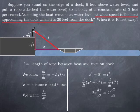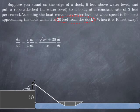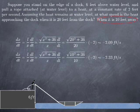We solve for the unknown rate dx/dt and obtain L over x multiplied by the rate of change of L. Since we are looking for the speed when the boat is 20 feet from the dock, we know dL/dt and x, but L is not given directly. From the Pythagorean theorem, x squared plus 36 equals L squared, so we can replace L with the square root of x squared plus 36. When x equals 20, plugging in 20 for x and negative 2 for dL/dt, we obtain negative 2.09 feet per second. When the boat is 10 feet from the dock, plugging in x equals 10 and dL/dt equals negative 2, we get negative 2.33 feet per second. The boat is accelerating as it moves closer to the dock.